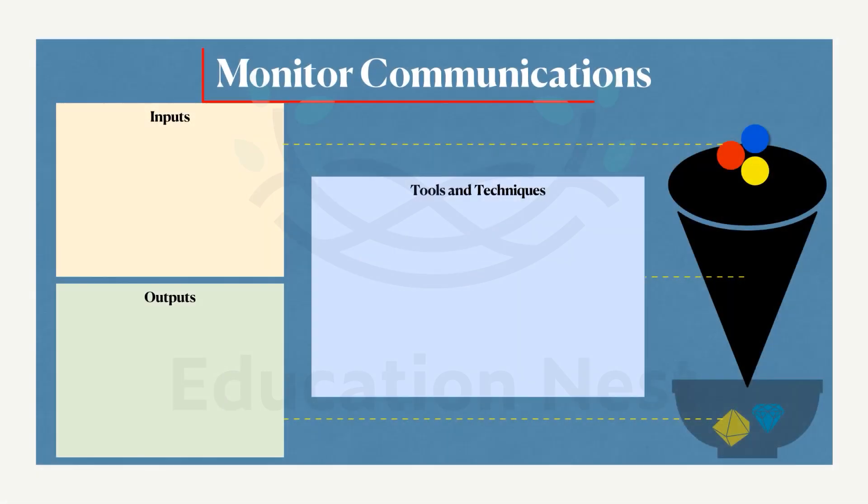Moving on to monitoring the communications. What happens here? This process, as we learnt in the introduction, makes sure the optimal flow of information. Monitoring is just making sure that you are maintaining optimal flow of the information.